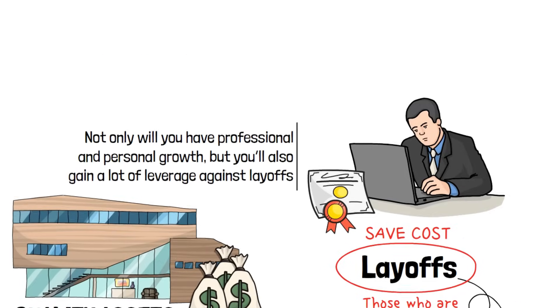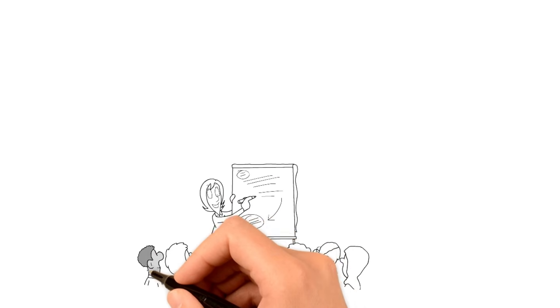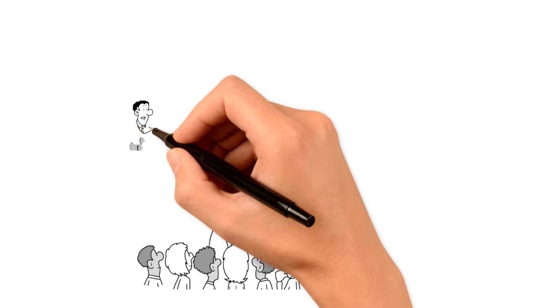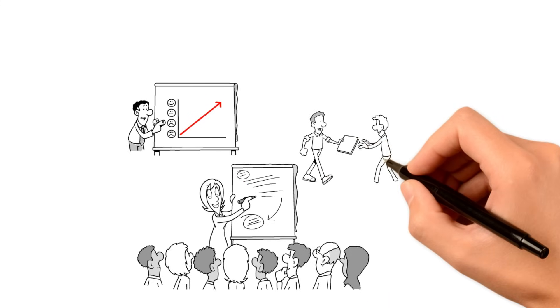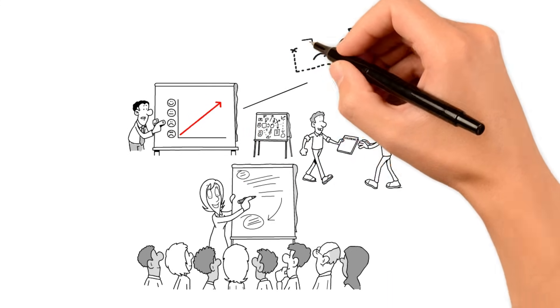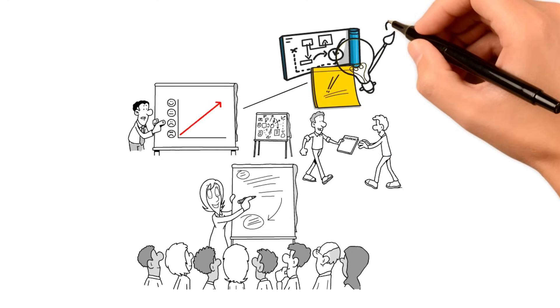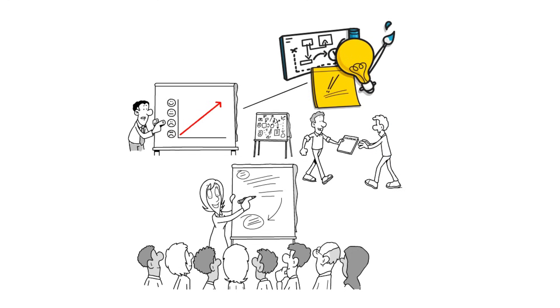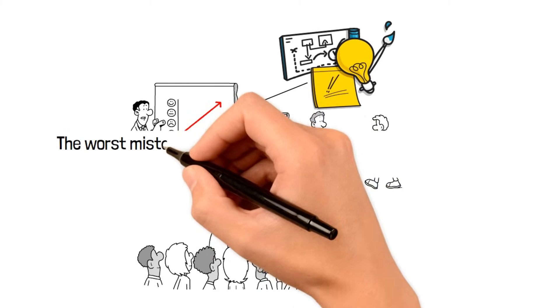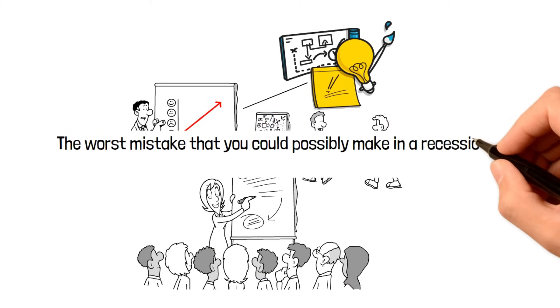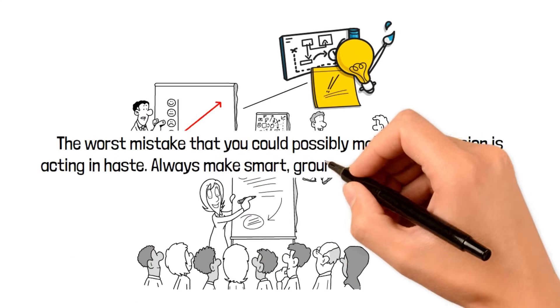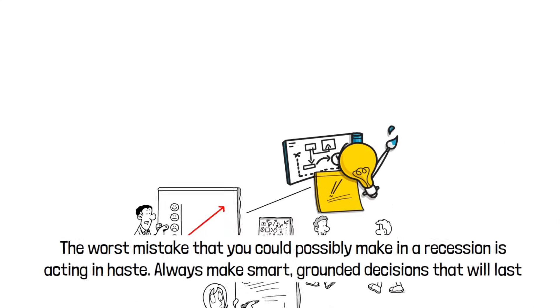Moving on to the third point, we all have to keep an eye out for worthy intel. By keeping up to date with reputable financial news sources or consulting with financial advisors, we can gain a lot of smart tips and insights into market conditions, and we can use them as leverage against the potential risks that come with recessions. The worst mistakes that you could possibly make in a recession is acting with haste. Always make smart, grounded decisions that will last.